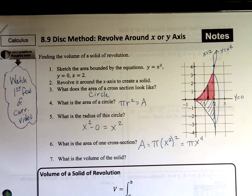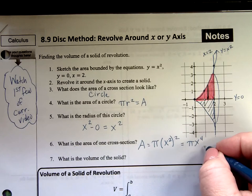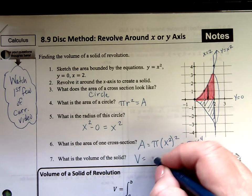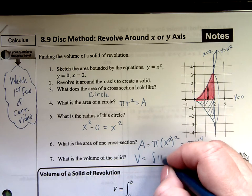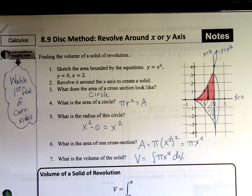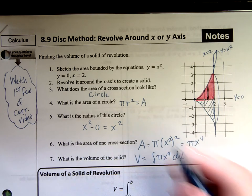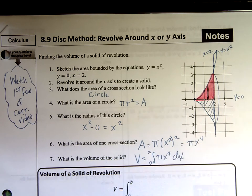What does that make the volume? Well, we know volumes come from integrating the area. So the volume is going to equal the integral of pi x to the fourth. Do I have bounds? Sure I do. My bounds are the x value, 0 and 2. There you go. That's the volume for it.